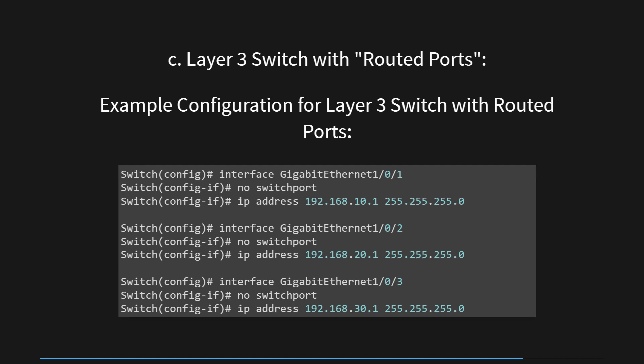Step 4: Similar steps are repeated for GigabitEthernet 1/0/2 and GigabitEthernet 1/0/3, configuring them as routed interfaces with IP addresses 192.168.20.1 and 192.168.30.1 respectively, along with their respective subnet masks. By converting these interfaces to Layer 3 routed interfaces, the switch can now perform routing functions between the different IP networks. This setup allows the switch to function as a basic router, forwarding packets between connected networks based on IP addresses, useful for scenarios requiring basic inter-VLAN routing or connectivity between different IP subnets.